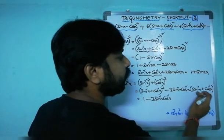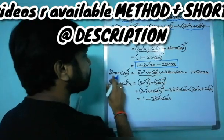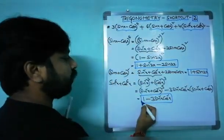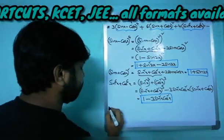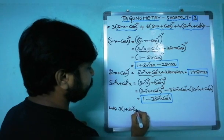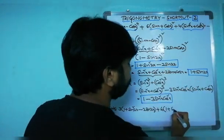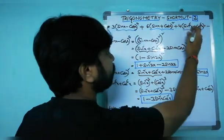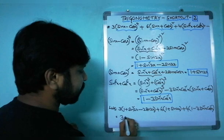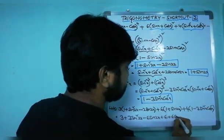Here a = sin²x, b = cos²x, so sin²x + cos²x = 1. This gives 1 - 3·sin²x·cos²x. Now combining the LHS: 3 times the first result is 3(1 + sin²2x - 2sin2x), plus 6 times (1 + sin2x), plus 4 times (1 - 3sin²x·cos²x).